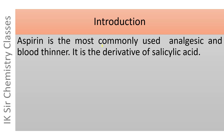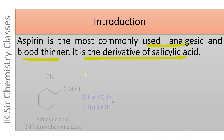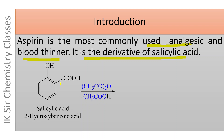Aspirin is the most commonly used analgesic and blood thinner. It is the derivative of salicylic acid. Salicylic acid contains an OH group at position number 2 of benzoic acid. Its IUPAC name is 2-hydroxybenzoic acid and its common name is salicylic acid.